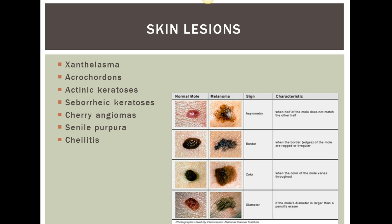Chelitis is an angular stomatitis, and it can be due to increased saliva — if the person is drooling a lot, you would see that on the side of the mouth. This slide also includes signs and symptoms of cancer: you're looking at the symmetry, the border of the lesion, the color, and diameter.